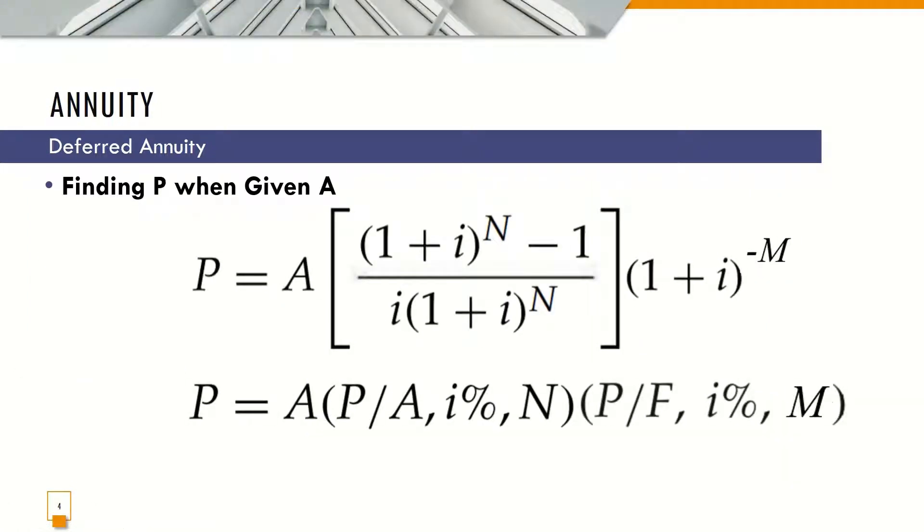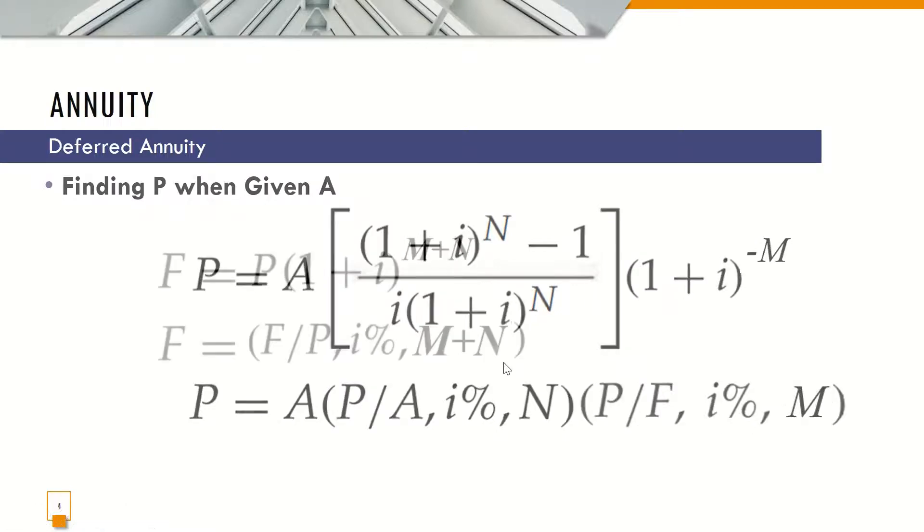The formula in finding P when A is given is P equals A times the quantity of 1 plus I raised to N, then minus 1, all over I, times 1 plus I raised to N. And we are going to add the compound formula, 1 plus I raised to N. Or in symbolic form, P equals A times P given A at I percent and N periods, and then P given F at I percent for N periods.